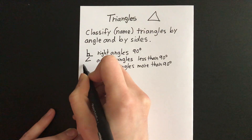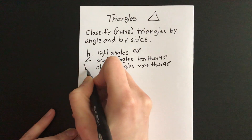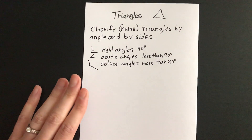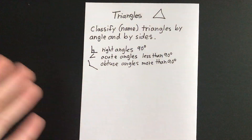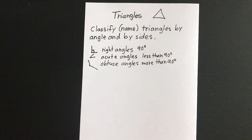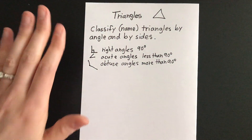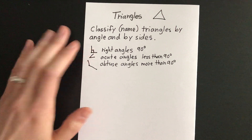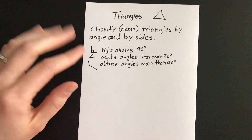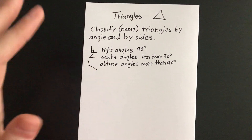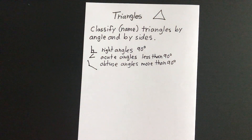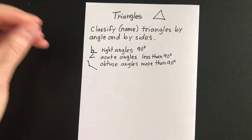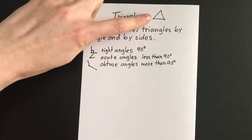And then we have obtuse angles, which are more than 90 degrees or greater than. They usually look kind of like a wide open mouth. We can usually recognize them pretty well, even when you don't have a protractor. Right angles, you got to be careful because they can be tricky. So knowing these three that we've already learned before, we're going to now use them to name types of triangles.